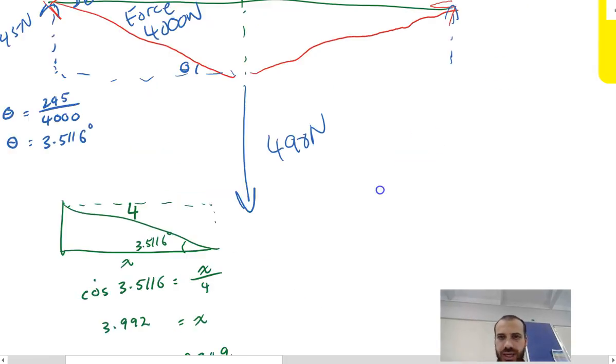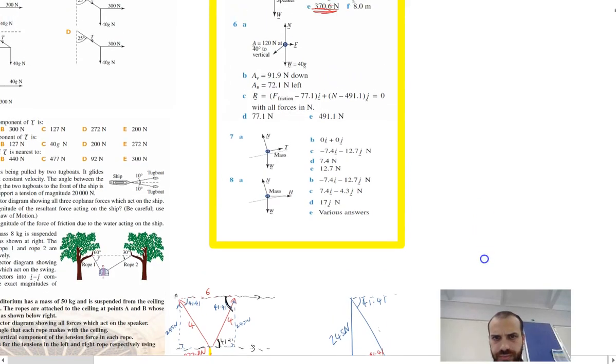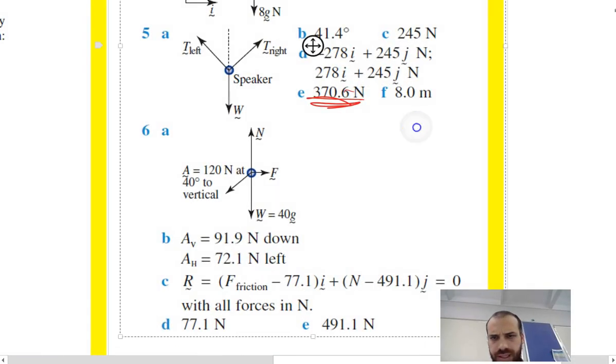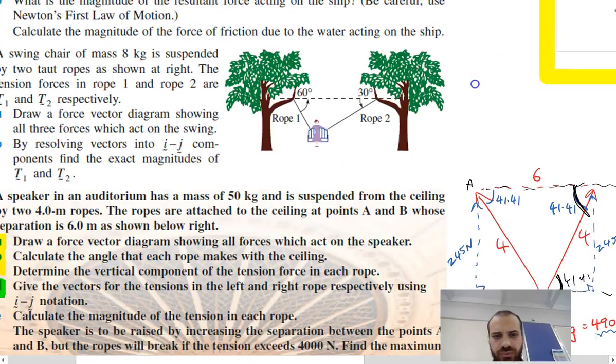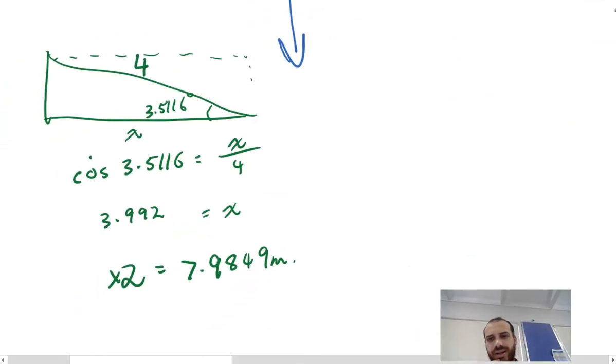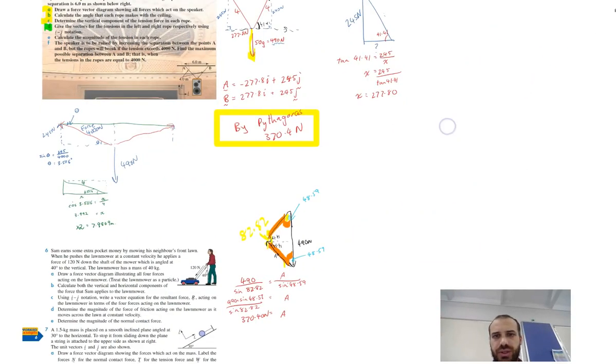I'll check my answer. I'll see how I did here. Maximum separation, 8 meters. I'm within a rounding error there. Again, I've been through about 5 steps and I keep rounding to 2 decimal places. So it's not surprising that I'm out here by a little bit. But that's my working.